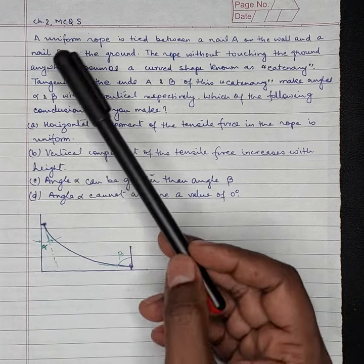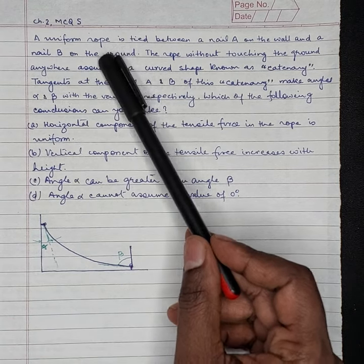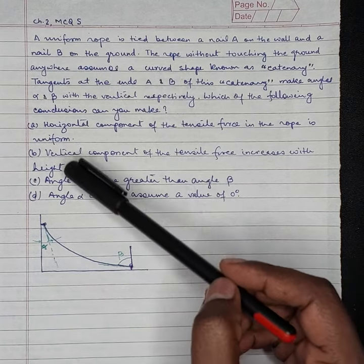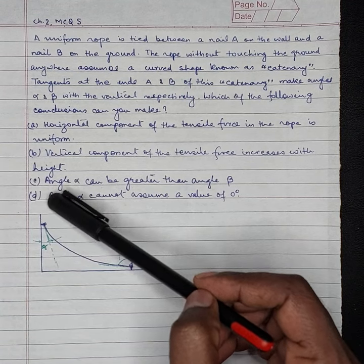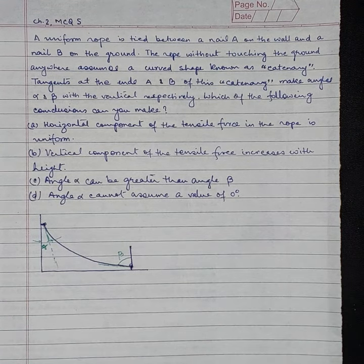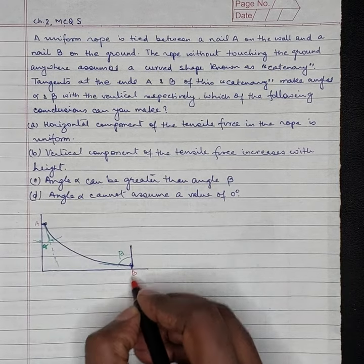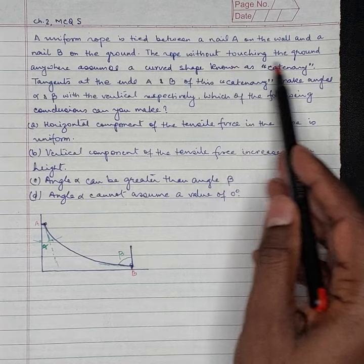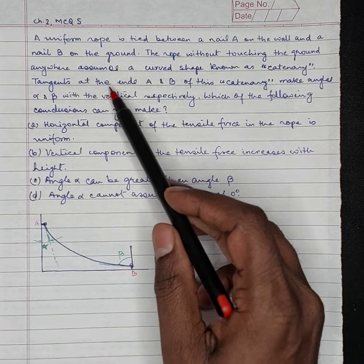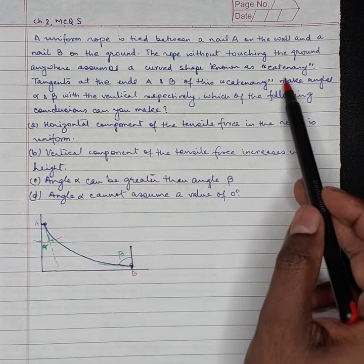The question is: a uniform rope is tied between nail A on the wall and a nail B on the ground. The rope without touching the ground anywhere assumes a curved shape known as catenary.